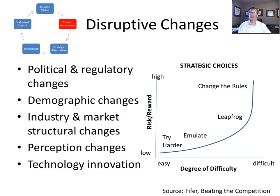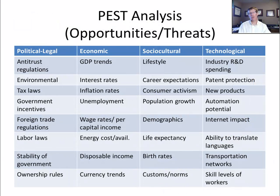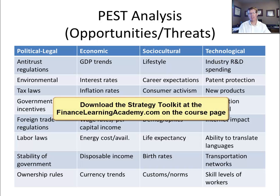There are all sorts of examples where trends can change the playing field. The strategic analysis of external factors can be dealt with using two strategic tools. The first is the PEST analysis, which means we will attempt to identify the political, legal, economic, socio-cultural, and technological trends that would impact any of the business drivers. You will find a tool for completing this analysis in the strategy toolkit available for download at thefinancelearningacademy.com.